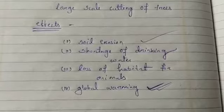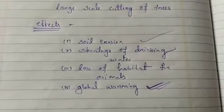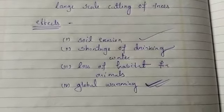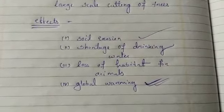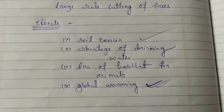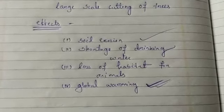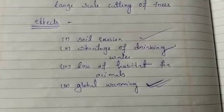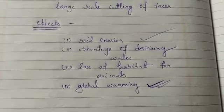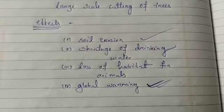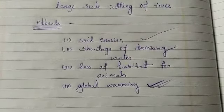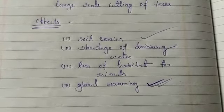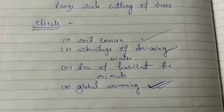Forests influence climate change mainly by affecting the amount of carbon dioxide in the atmosphere. When a forest grows, carbon is removed from the atmosphere and absorbed into the wood, leaves, and soil. Because forests can absorb and store carbon over an extended period of time, they are considered carbon sinks.